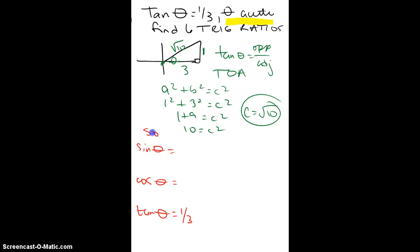Sine is SOH, so that's opposite over hypotenuse. If I look at my arrow and I want to know what's opposite, that's going to be my 1, and the hypotenuse is the square root of 10. You have to rationalize your denominator, so I'm going to multiply by that. I get square root of 10 over 10 because the square root of 100 is 10.